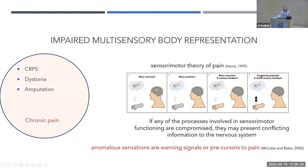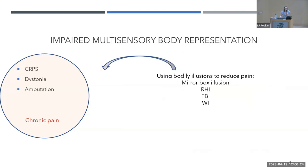In this simple cartoon, I show an example of action execution. There is a motor command from our cortex; our brain makes predictions about the sensory feedback we are going to perceive when we perform an action. We perceive that sensory feedback and our brain compares the predicted to the perceived — this comparison optimizes motor control. This theory states that if at any point this sensory-motor process is compromised, it may present conflicting information to the nervous system, so anomalous sensations can be warning signals or precursors to pain.